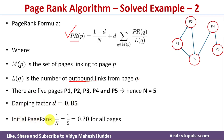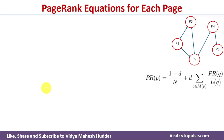The initial page rank for all pages is 1/N = 1/5 = 0.20. First, we will find the page rank equation for each web page using this formula.